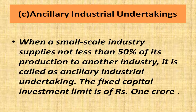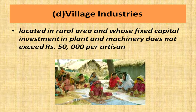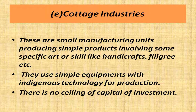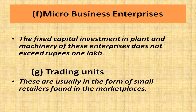Ancillary industrial undertakings: when a small scale industry supplies not less than 50% of its production to another industry, it is called an ancillary industrial undertaking, with a fixed capital investment limit of 1 crore. Village industries are located in rural areas, and their fixed capital investment in plant and machinery does not exceed 50,000 per artisan. Cottage industries are small manufacturing units producing simple products involving specific art or skill — like handicrafts and filigree — using simple equipment with indigenous technology. There is no ceiling on capital investment for cottage industries.